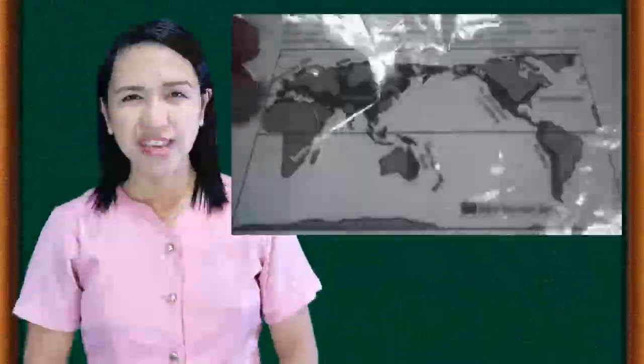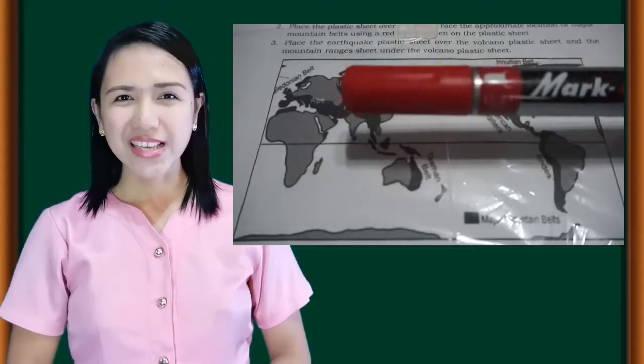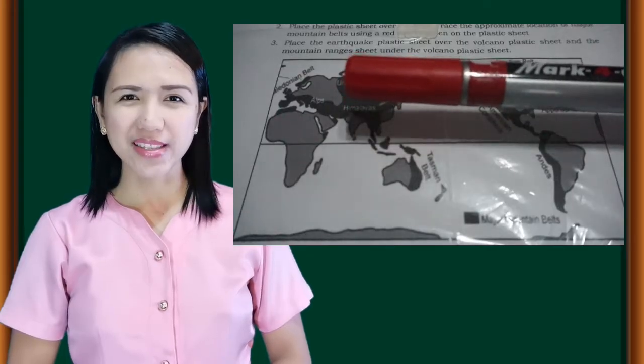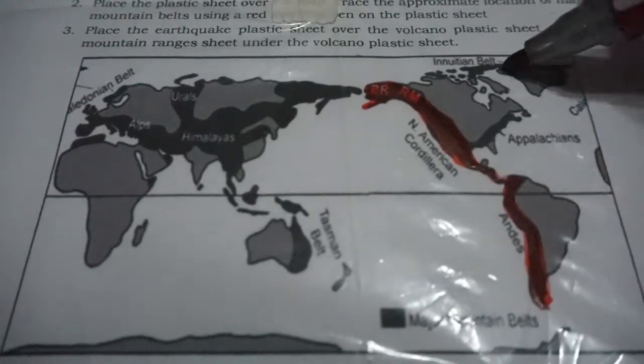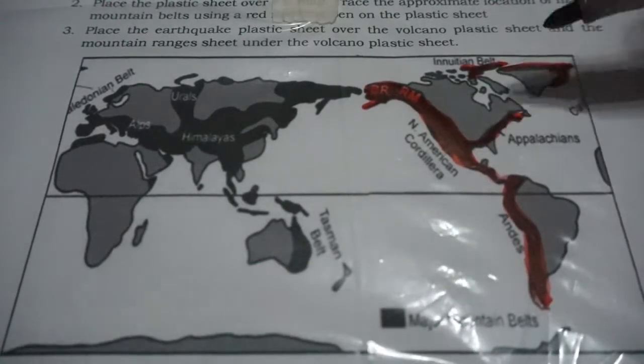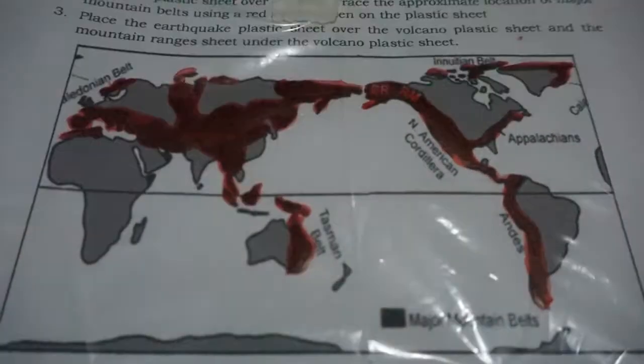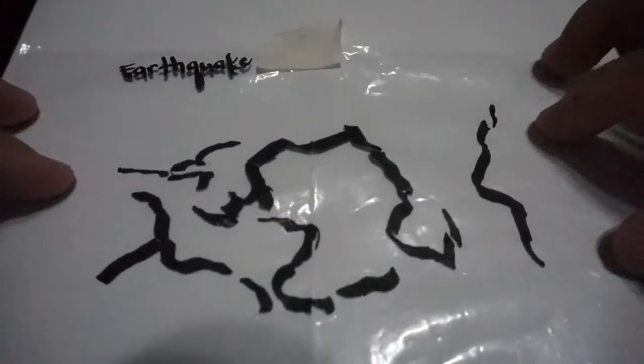Place the plastic sheet over the map. Trace the approximate location of major mountain belts using a red marking pen on the plastic sheet. Then place the earthquake plastic sheet over the volcano plastic sheet, and place the mountain ranges plastic sheet over the two plastic sheets.